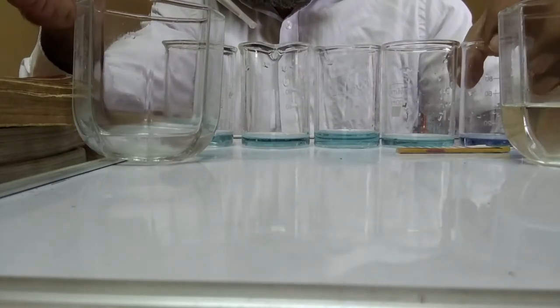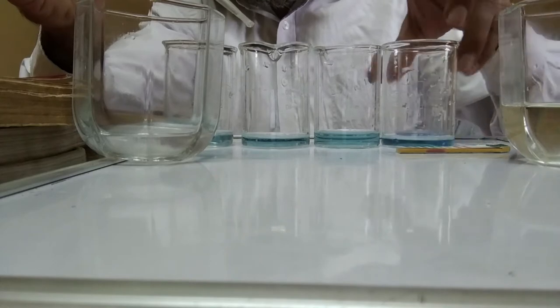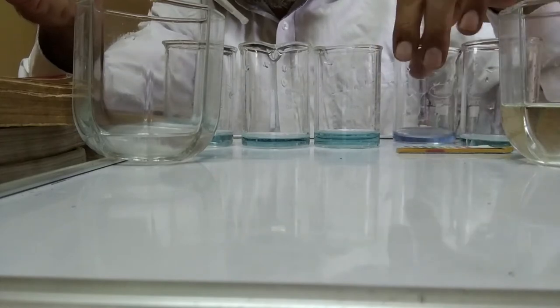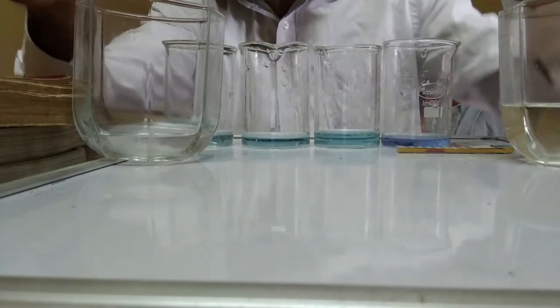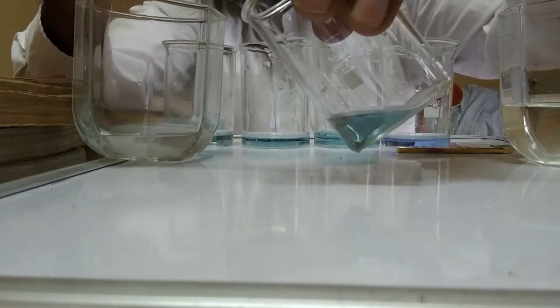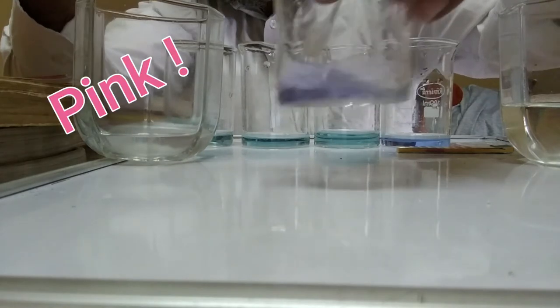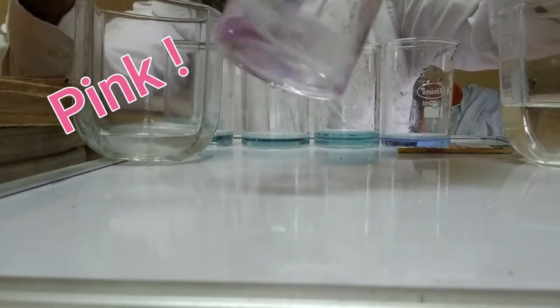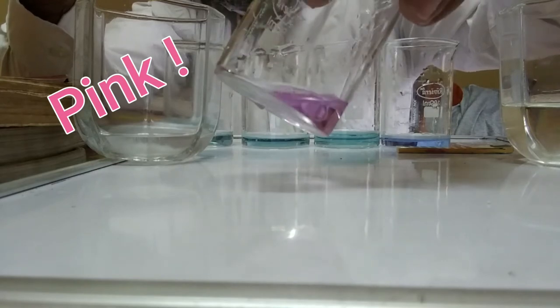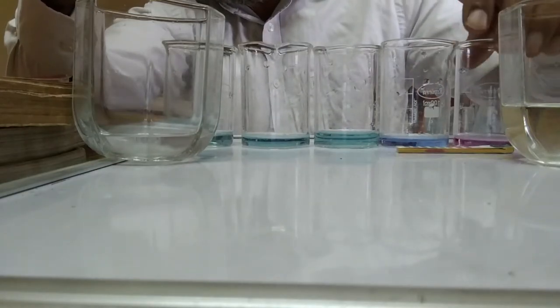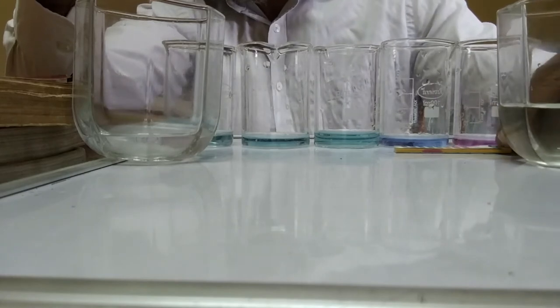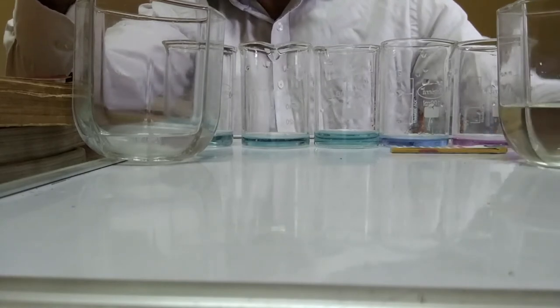Now, in the second beaker I add a little bit more acid and let us see the change. It turns beautiful pink. I keep it on the extreme side because it has got more acid. The next one, royal blue, has got little less acid.